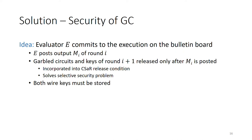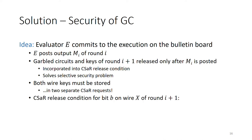As for the wire keys, recall that at the time the parties store those with CSAR, the input which will be used by the evaluator is not known. So the parties must store both the key for zero and one for each wire. The crucial idea here is that the parties store these keys in two separate CSAR requests. Then the release condition for bit b on some wire x in particular demands that the message M_i contains exactly bit b on position x. This solves the problem of revealing only a single wire key for each wire.